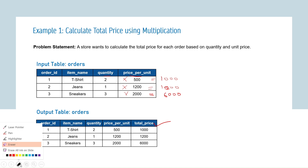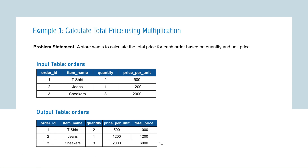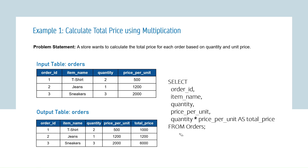The final query lists the column names in the SELECT clause: order ID, item name, quantity, price per unit, and the new total price column. The orders table is referenced in the FROM clause. The total price column is given an alias and is calculated by multiplying the quantity column and the price per unit column. That's how you make use of arithmetic operators.